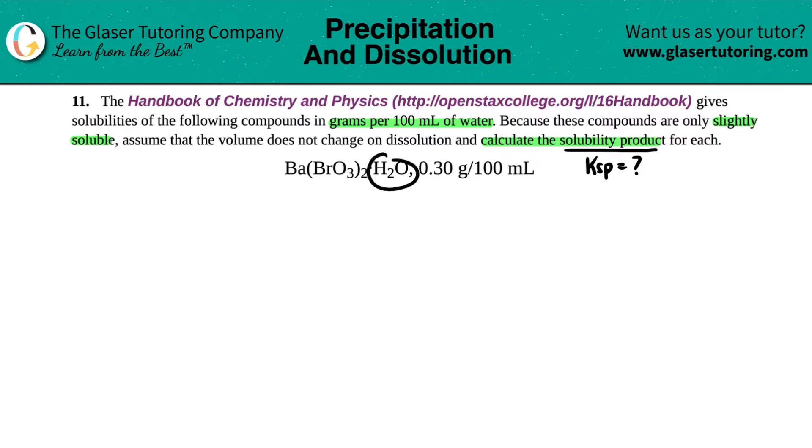The hydrate is just the water, the solvent. So we don't worry about this. We only care about this component. So I'm only going to write my balanced equation based off of the barium bromate. So Ba(BrO3)2.